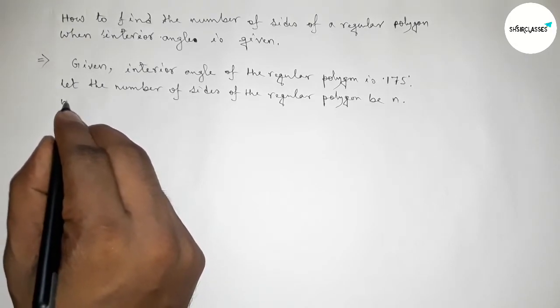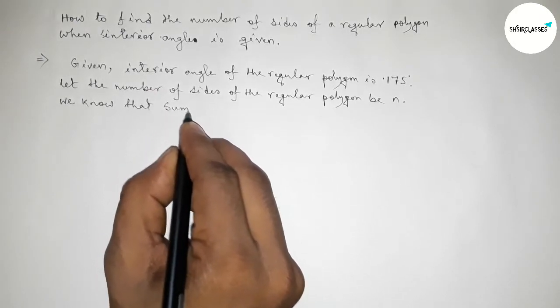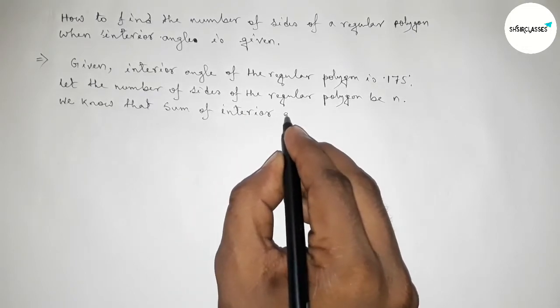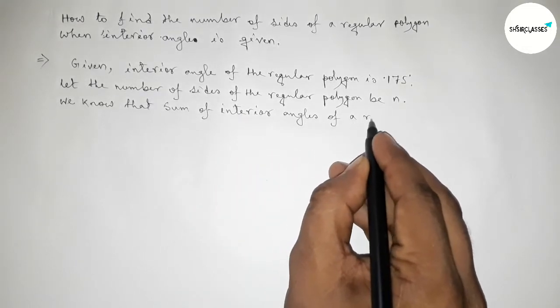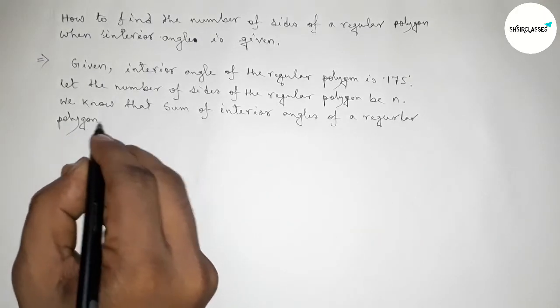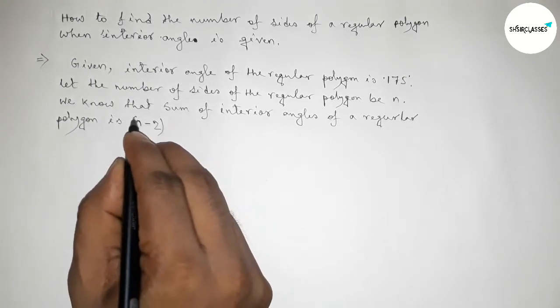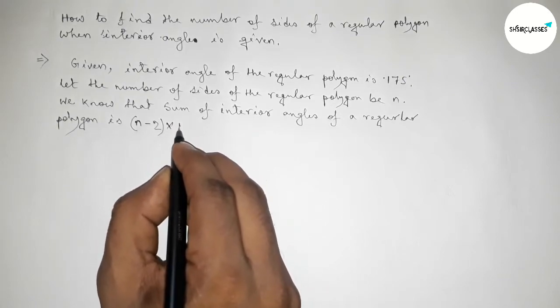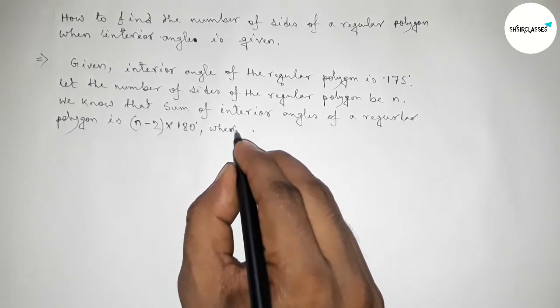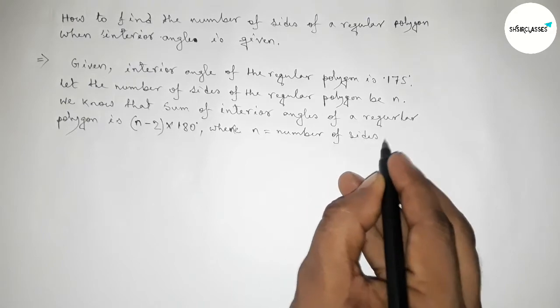Now we know that sum of interior angles of a regular polygon equals to (n - 2) × 180. This is a very important formula to find the sum of interior angles. Here the formula is (n - 2) × 180 degrees, where n equals the number of sides of the regular polygon.